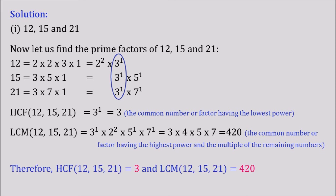Therefore, the HCF of 12, 15, and 21 is equal to 3, and the LCM of 12, 15, and 21 is equal to 420. I believe you understood this calculation. If you like my video, kindly subscribe and let your friends know. Thank you. Bye.